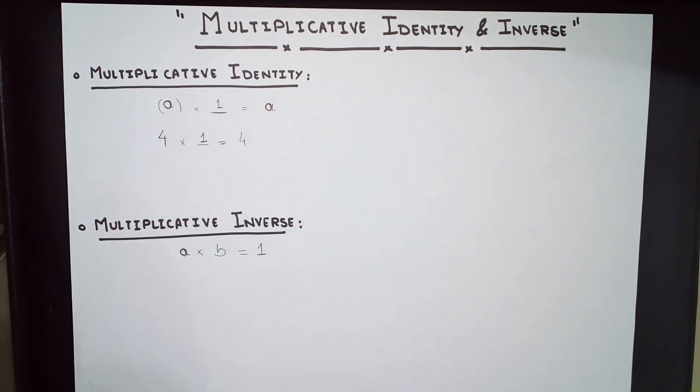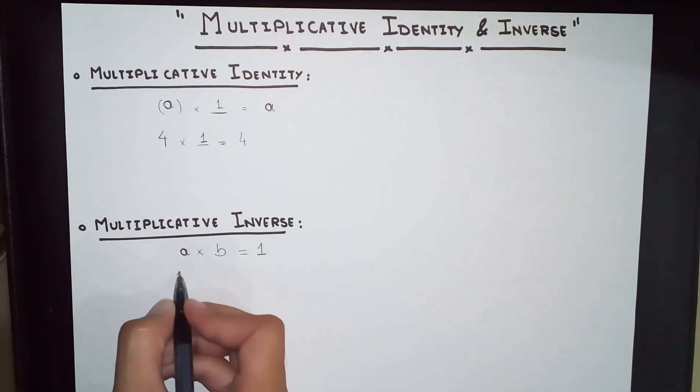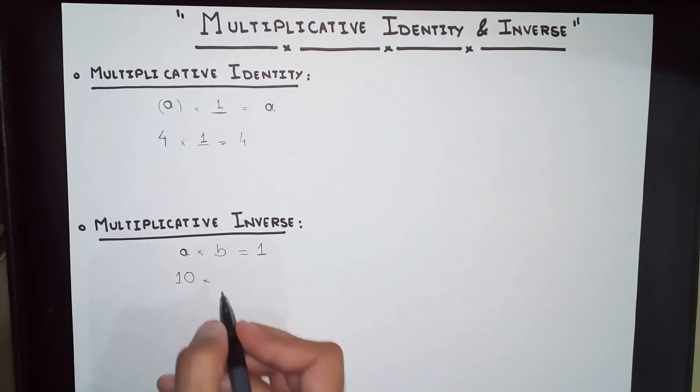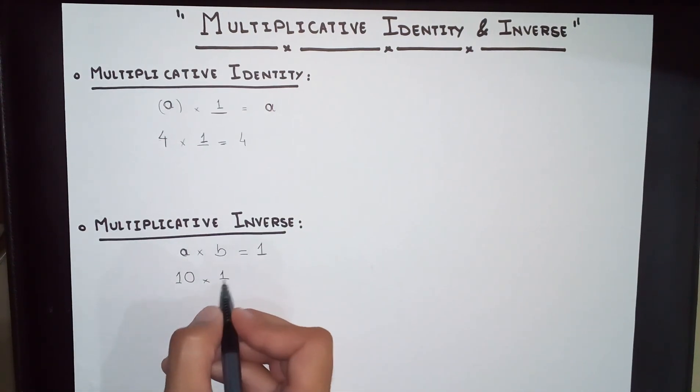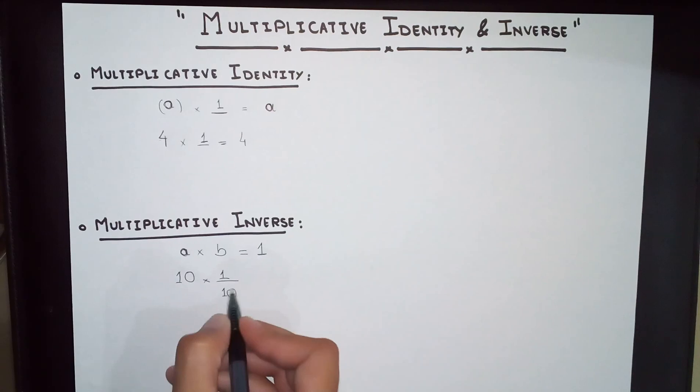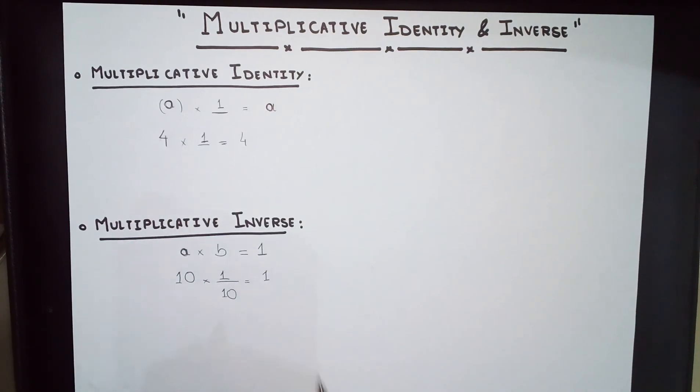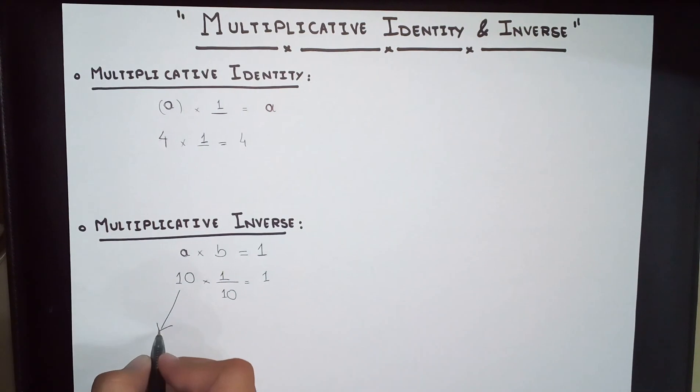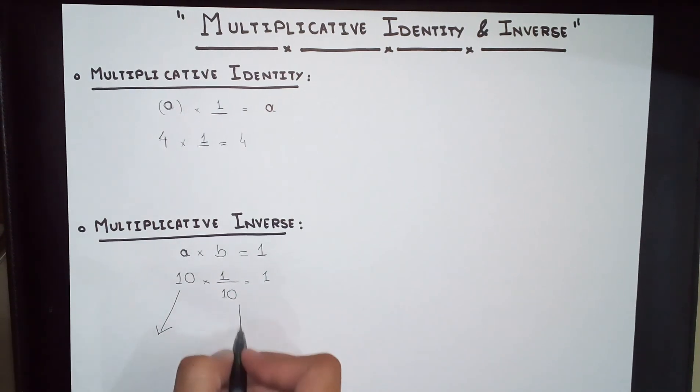There are a lot of numbers that can do that. Let us get into some of them. If we have 10 and you multiply that with 1 over 10, you get 1. So we will say that 10 is the multiplicative inverse of 1 over 10.